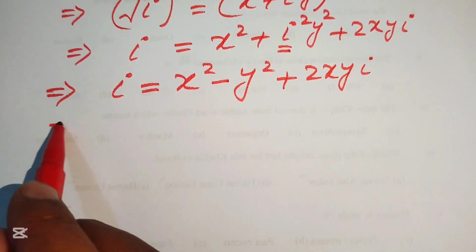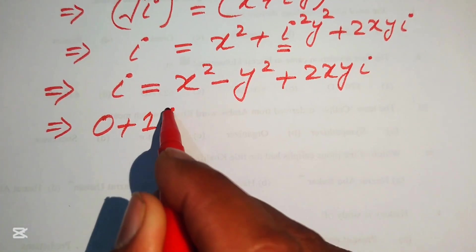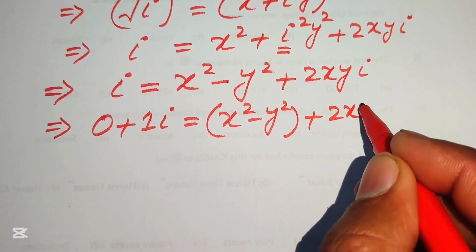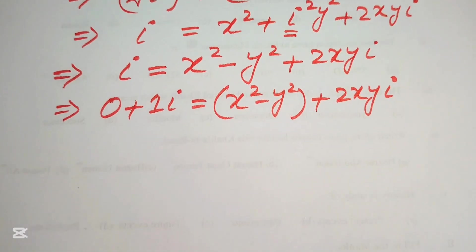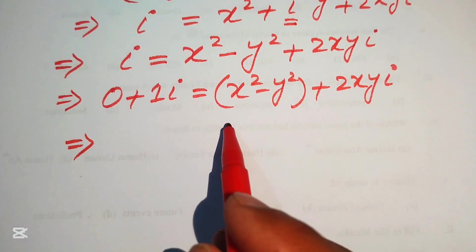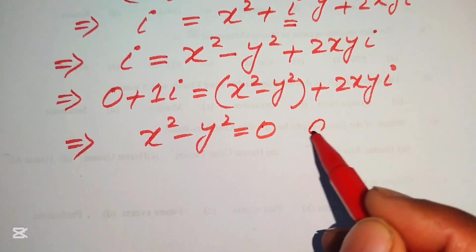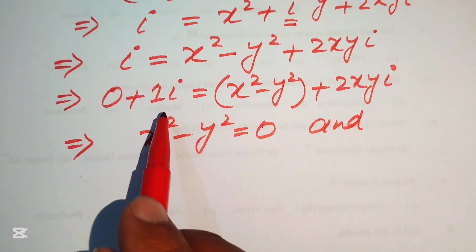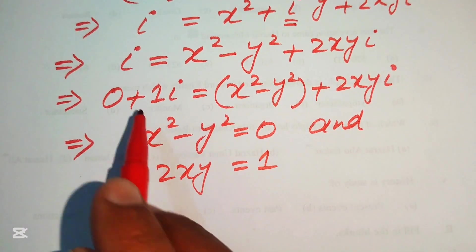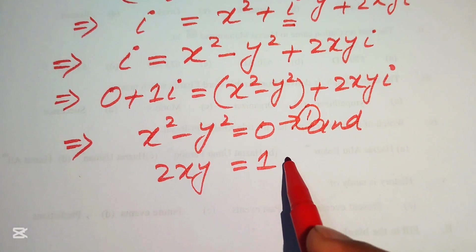We rewrite iota as 0 + 1·i, so the equation is 0 + 1·i = (x² - y²) + 2xy·i. Comparing real parts: x² - y² = 0, which is equation one. Comparing imaginary parts: 2xy = 1, which is equation two.